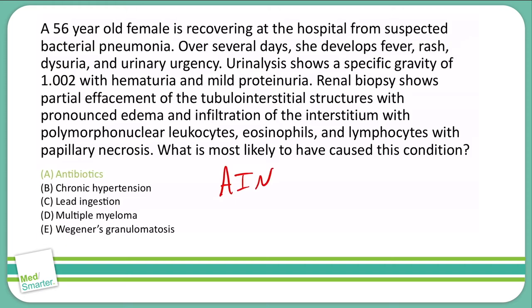What we're seeing here — fever, rash, inability to concentrate urine giving us a low specific gravity, and the biopsy findings — is all classic presentation of interstitial nephritis. What causes interstitial nephritis? Drugs are the most common cause. Antibiotics like beta-lactams, sulfonamides, rifampin, and quinolones can all cause acute interstitial nephritis.